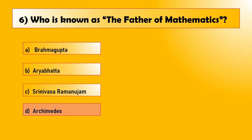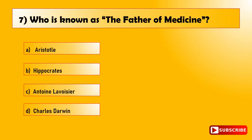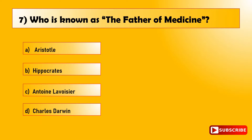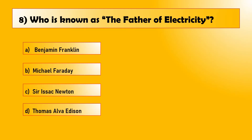Question number six: who is known as the father of mathematics? Option D, Archimedes. Question number seven: who is known as the father of medicine? Option B, Hippocrates.